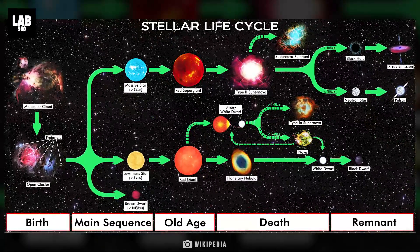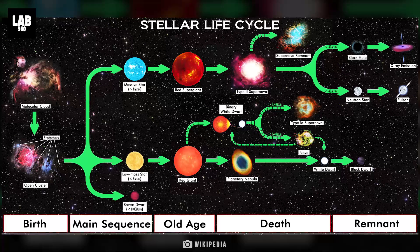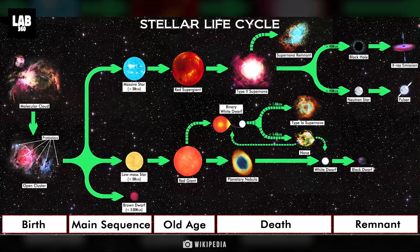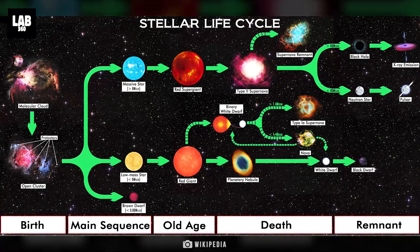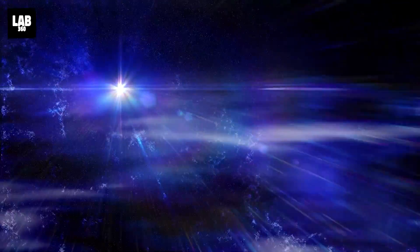Stars follow different life cycle paths depending on their mass. Stars having mass at least eight times the mass of our sun are classified as massive stars, and die in a stupendous blast called a supernova when they reach their end stages.